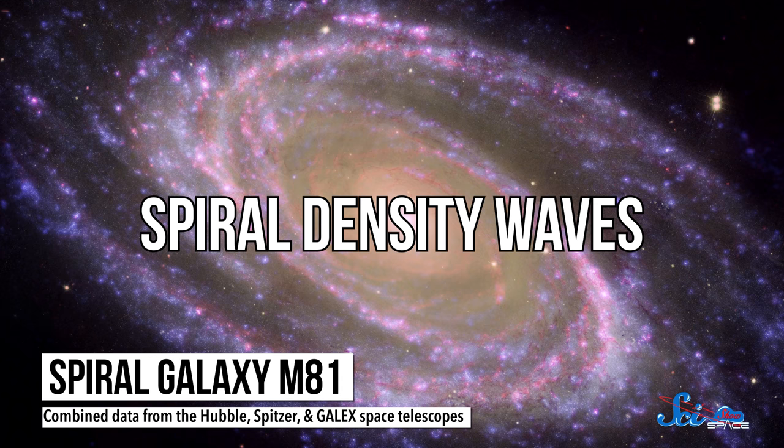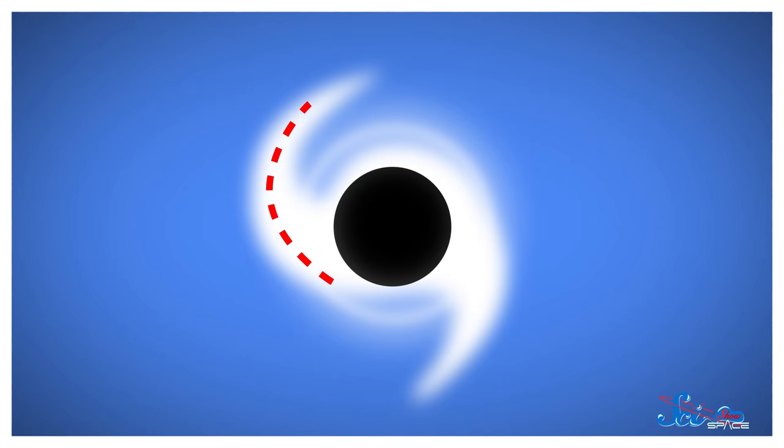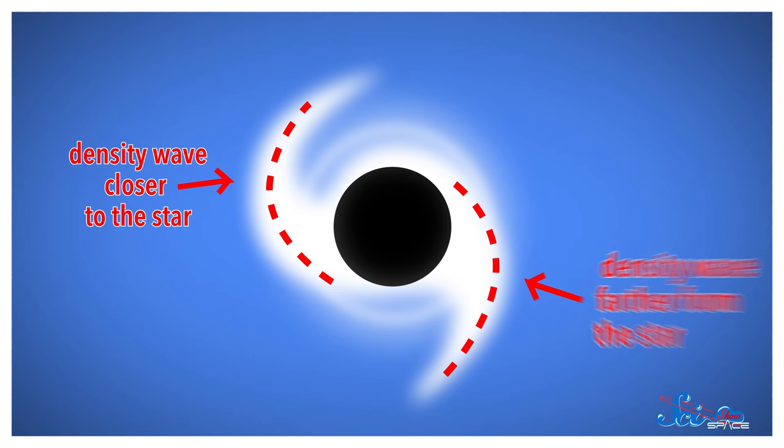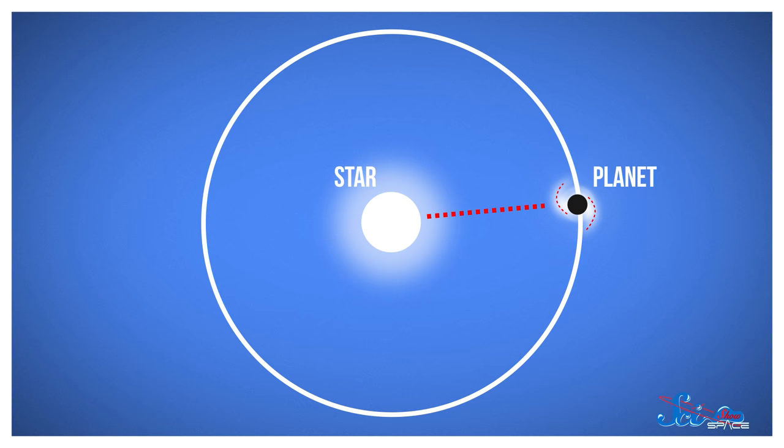A new planet's gravity affects the nearby disk material, bunching it up into giant waves called spiral density waves. They're the same kind of structures that give galaxies their arms and Saturn's rings their details. There's one density wave inside the planet's orbit, closer to the star, and one outside the planet's orbit, on the side farther from the star. Now, the closer you are to the star, the harder its gravity pulls you and the faster you travel.